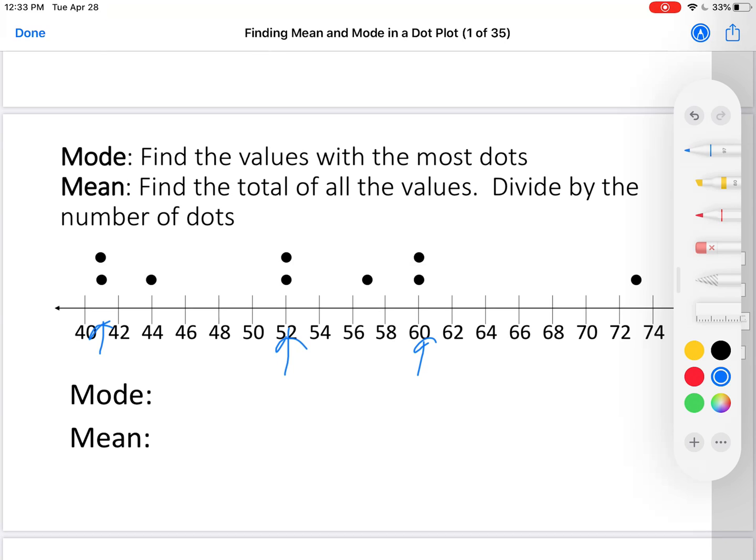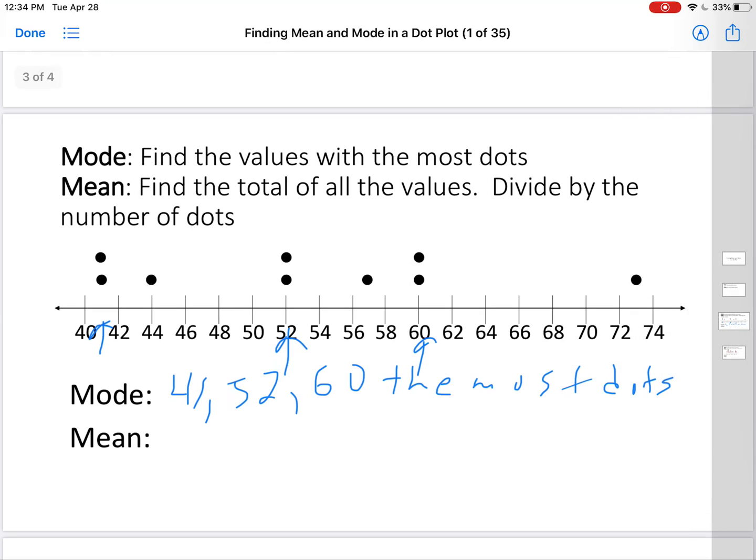They are not two, two, and two. They are the values of those columns. That's 41, 52, and 60. And why are they the modes? Because they have the most dots. And that's how you show your work in finding mode. It's just that simple.